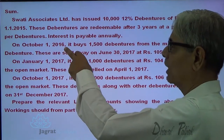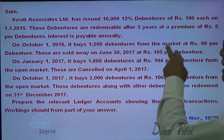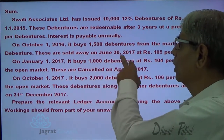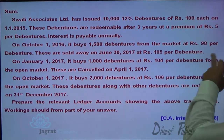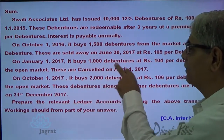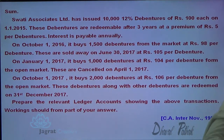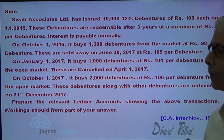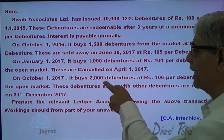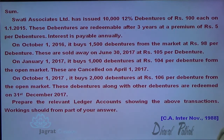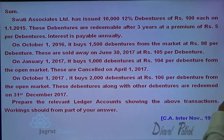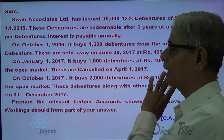On 1st of October 2016, it buys 1,500 debentures from the market at Rs. 98 per debenture. These are sold on 30th June 2017 at Rs. 105 per debenture. On 1st of January 2017, it buys 1,000 debentures at Rs. 104 per debenture from the open market. These are cancelled on 1st of April 2017. On 1st of October 2017, it buys 2,000 debentures at Rs. 106 per debenture from the open market. This debenture along with other debentures were redeemed on 31st of December 2017.